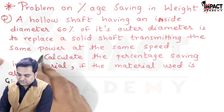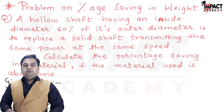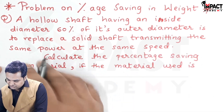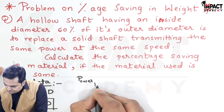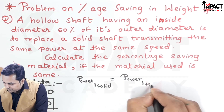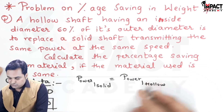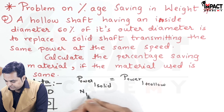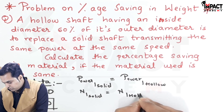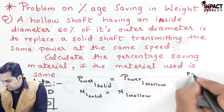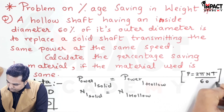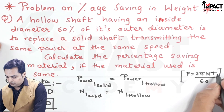The hollow shaft is to replace a solid shaft transmitting the same power at the same speed. So the power transmitted by the solid shaft is the same as the power transmitted by the hollow shaft, and the RPM is also the same. Since power is given by the formula 2πNT/60, when power and RPM are the same, the torque also remains the same.